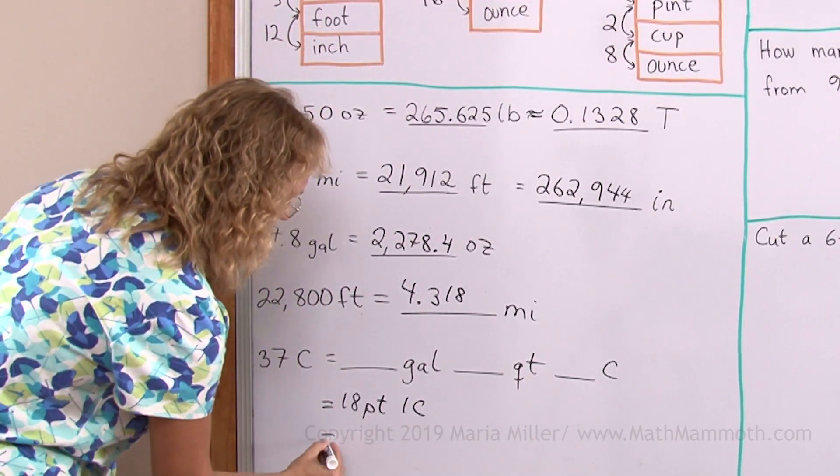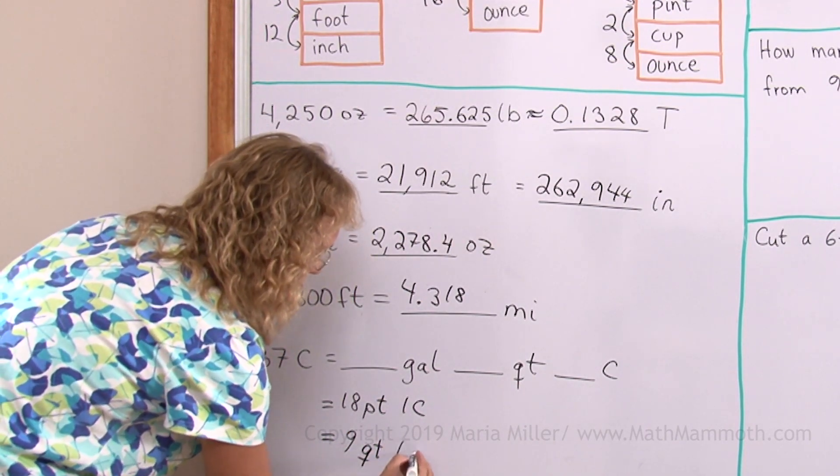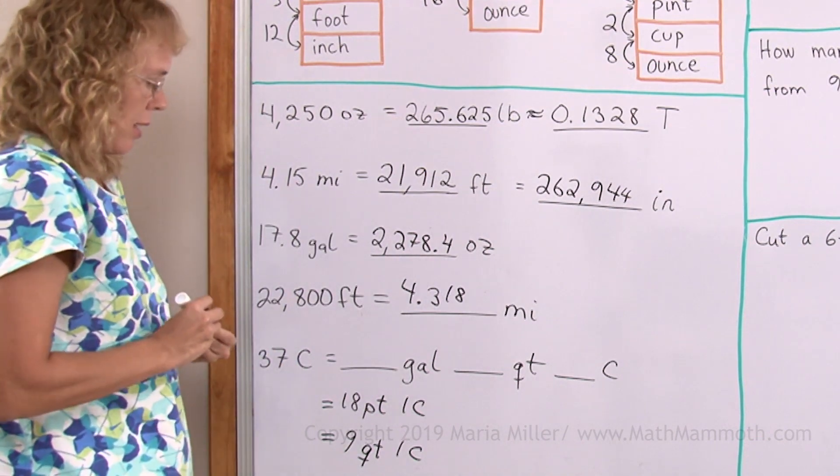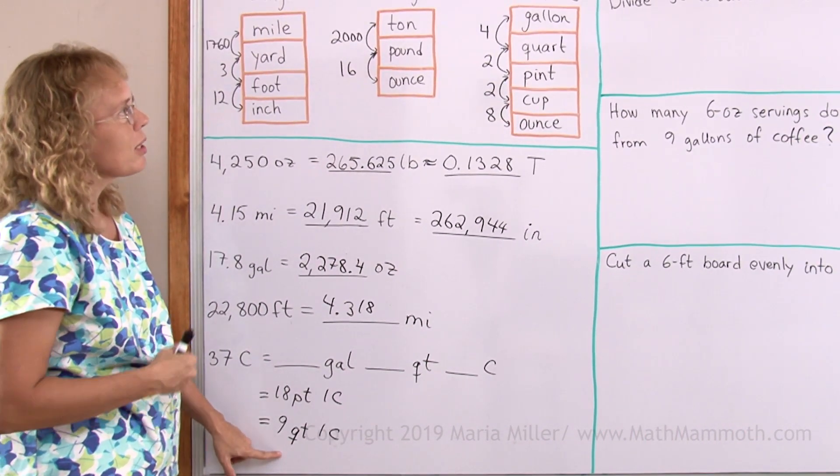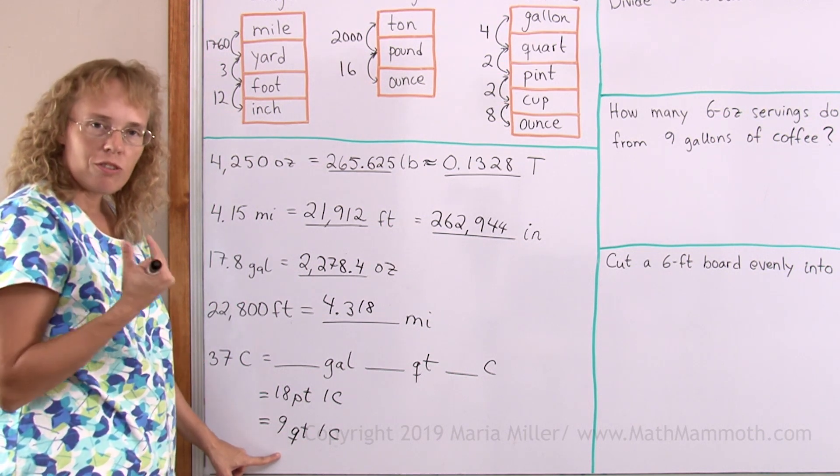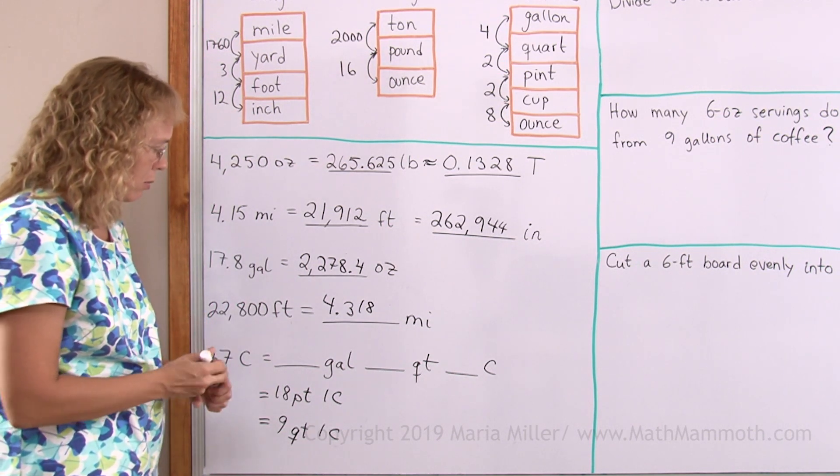9 quarts. And then the one cup is still there. And now from quarts to gallons. 9 quarts. How many gallons would it make if I need 4 quarts per gallon? This would make exactly 2 gallons, wouldn't it?